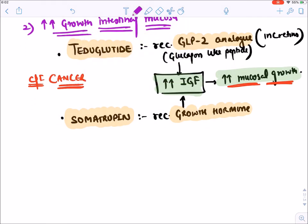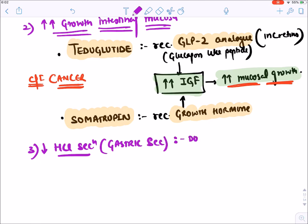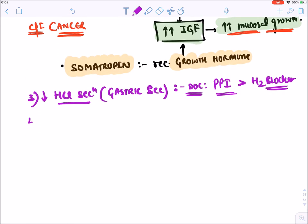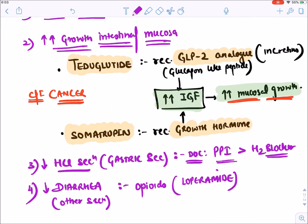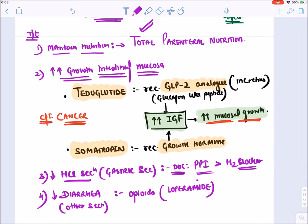We also need to reduce gastric secretions in short bowel syndrome, because increased gastric secretion can lead to diarrhea. The drug of choice for this is proton pump inhibitors; H2 blockers can also be used. To decrease diarrhea and other GIT secretions, we can give opioids like loperamide.